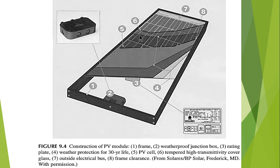The fifth is the photovoltaic cell, which is the main part. The sixth is the outermost tempered high-transmitting cover glass. The seventh is the outside electrical bus. So basically there are six main components of a solar panel.